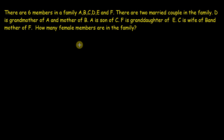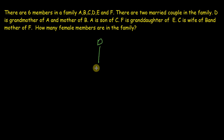We go line by line. The first line is: D is the grandmother of A and mother of B. So we draw D as mother of B and grandmother of A. Since D is female, we put a minus sign on D.